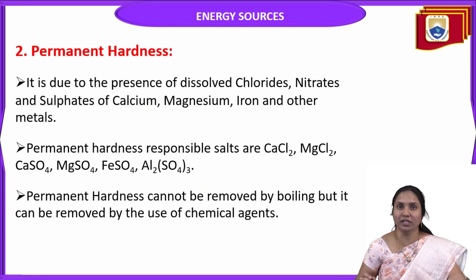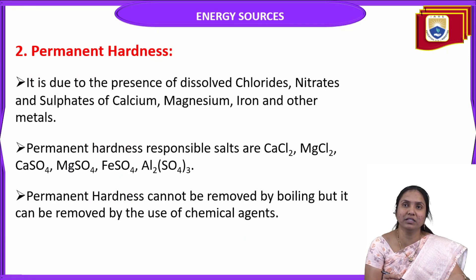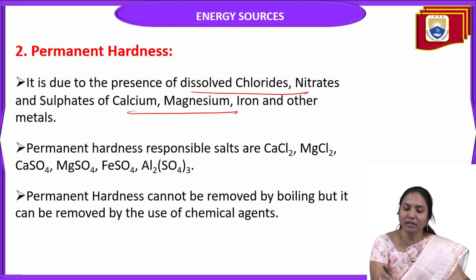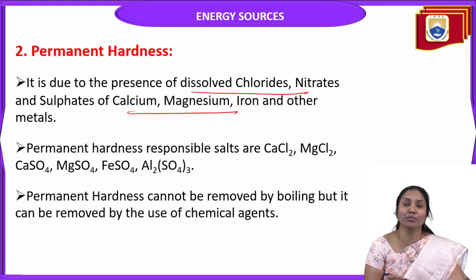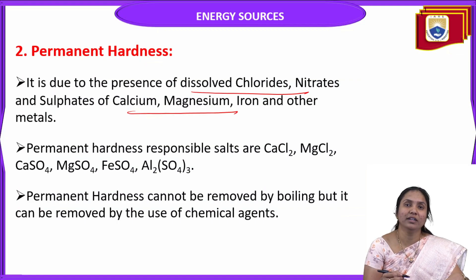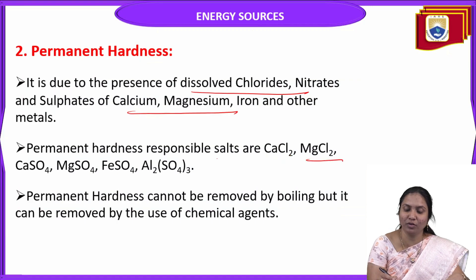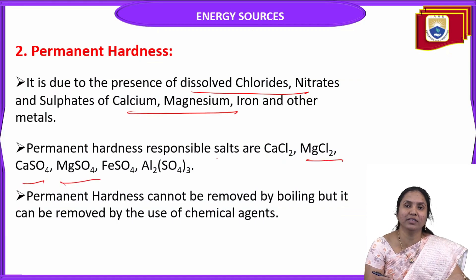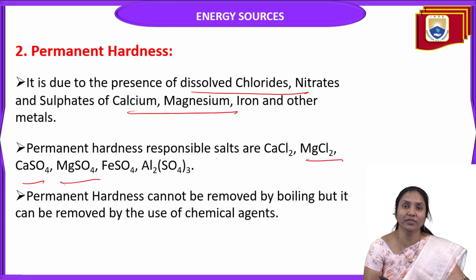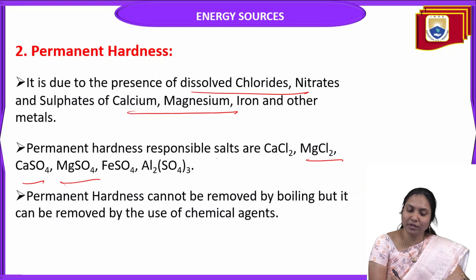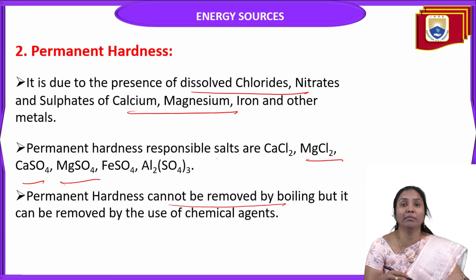Permanent hardness is due to the presence of dissolved chlorides, nitrates, and sulphates of calcium and magnesium, as well as iron and other metals. Most importantly, permanent hardness is mainly due to calcium and magnesium chlorides, sulphates, and nitrates — for example, calcium chloride, magnesium chloride, calcium sulphate, magnesium sulphate, and iron or aluminium sulphate.